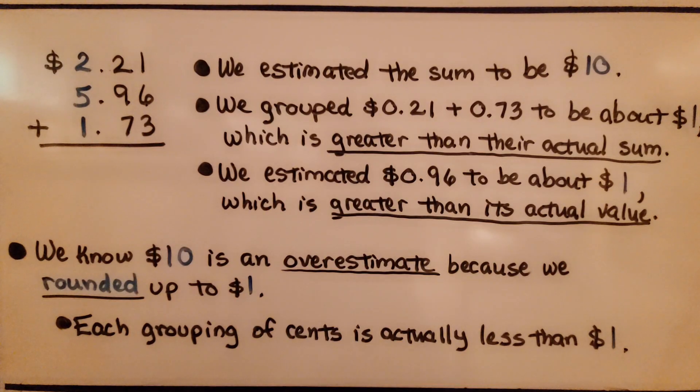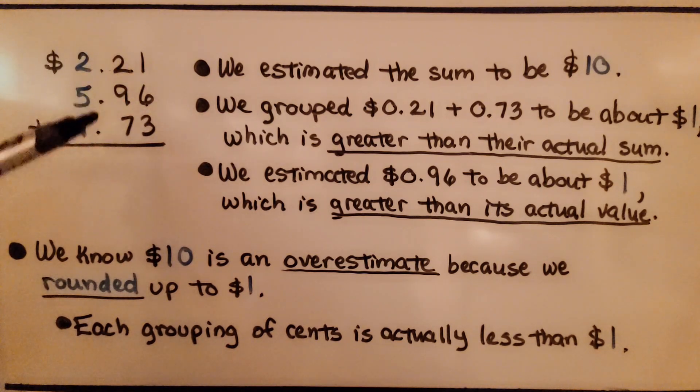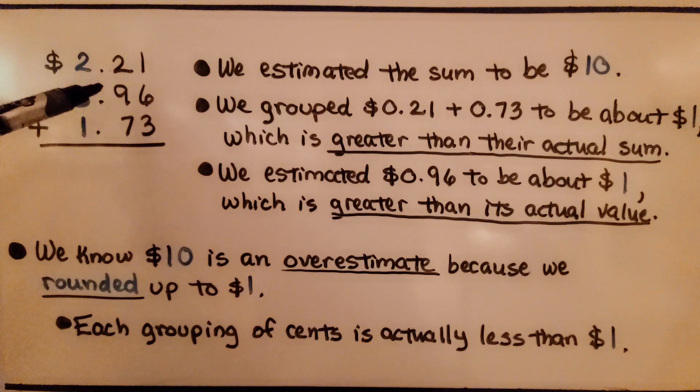We estimated the sum to be $10.00. We grouped 21 cents and 73 cents to be about $1.00, which is greater than their actual sum. And we estimated 96 cents to be about $1.00, which is greater than its actual value. We know $10.00 is an overestimate because we rounded up to $1.00. Each group of cents is actually less than $1.00.